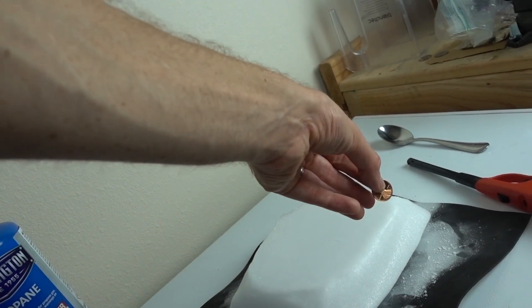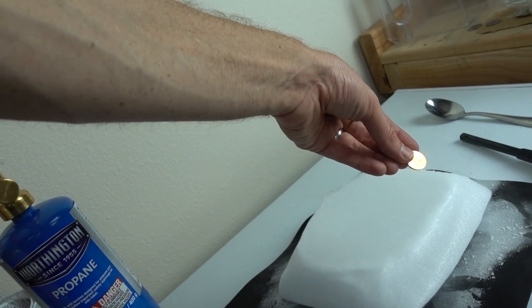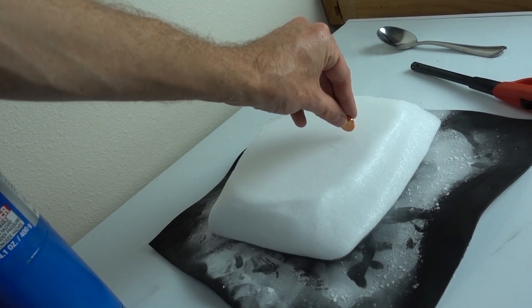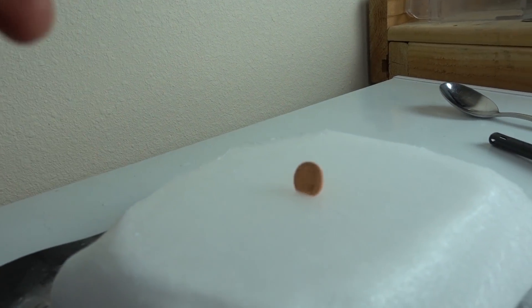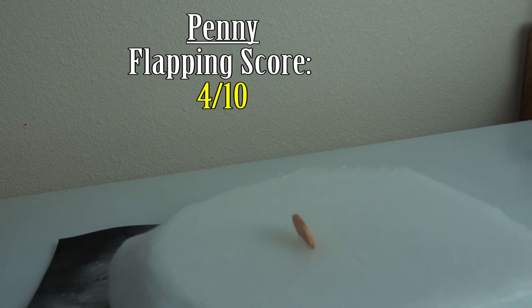Pretty good. Okay, now let's try a penny. So this is a little bit bigger than a dime, made of copper, at least on the outside. A little bit different material. See how it does. The penny's not working too well.